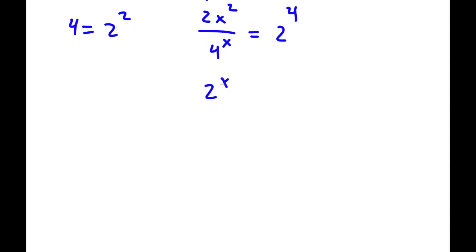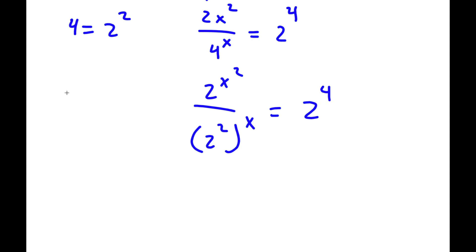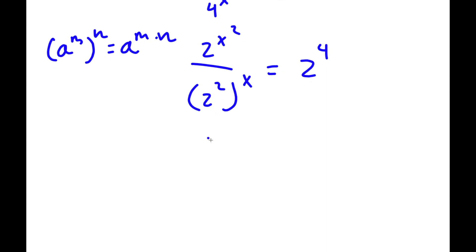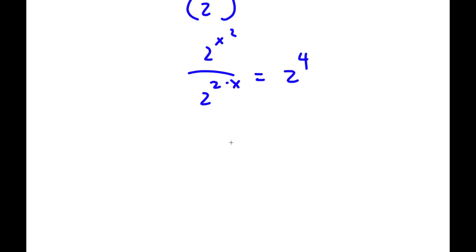This is 2 to the power of x squared. Now I have 2^(x²) over 2 to the power of 2 to the power of x is equal to 2 to the power of 4. Now, if I have something in the form a to the power of m to the power of n, this is equal to a to the power of m times n. So 2 to the power of 2 to the power of x equals 2 to the power of 2 times x, which is 2x. So now I have 2^(x²) over 2^(2x) is equal to 2 to the power of 4.